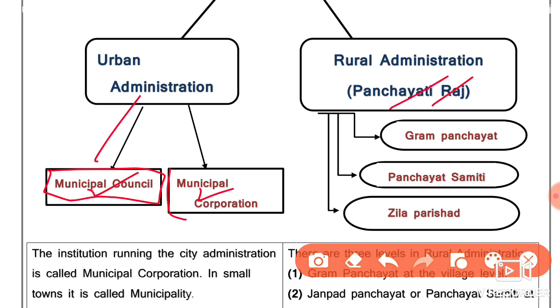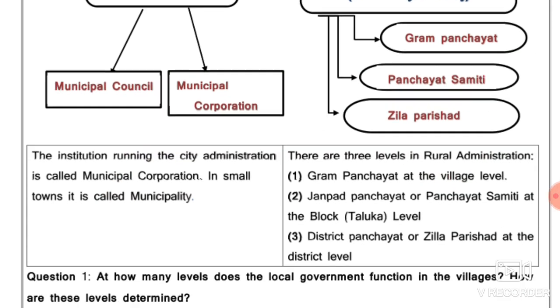In Panchayati Raj, Rural Administration is divided into three parts: Gram Panchayat, Panchayat Samiti, and Zilla Parishad.